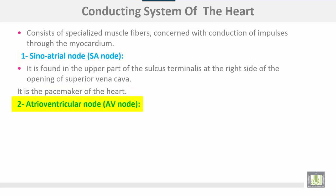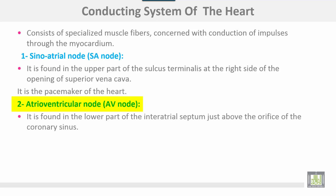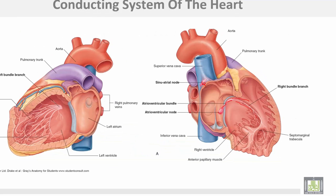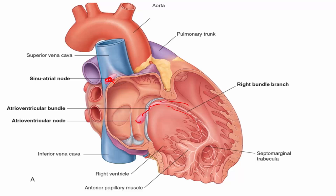The atrioventricular node, or AV node, is found in the lower part of the interatrial septum, just above the orifice of the coronary sinus. It gives rise to the AV bundle, or bundle of His, which descends in the ventricular septum and divides into right and left branches to supply both ventricles. The site of the SA node and AV node, the AV bundle or bundle of His, and its division into right and left branches are all shown here.